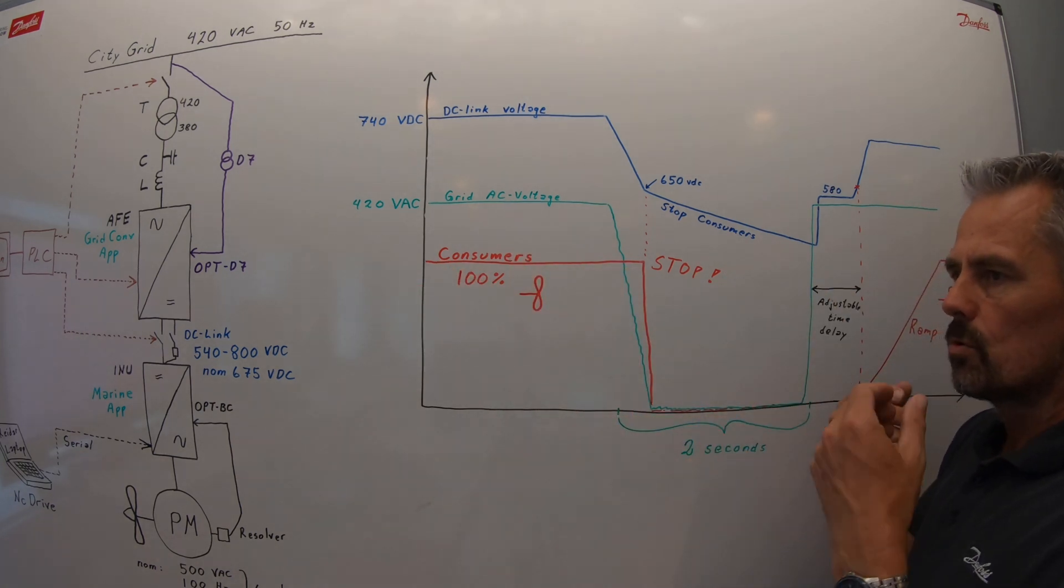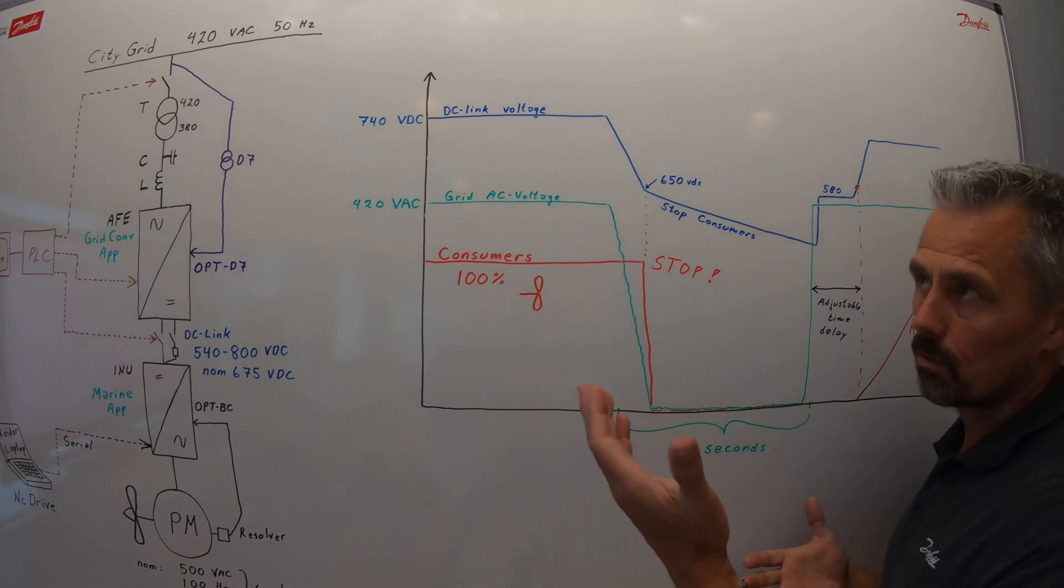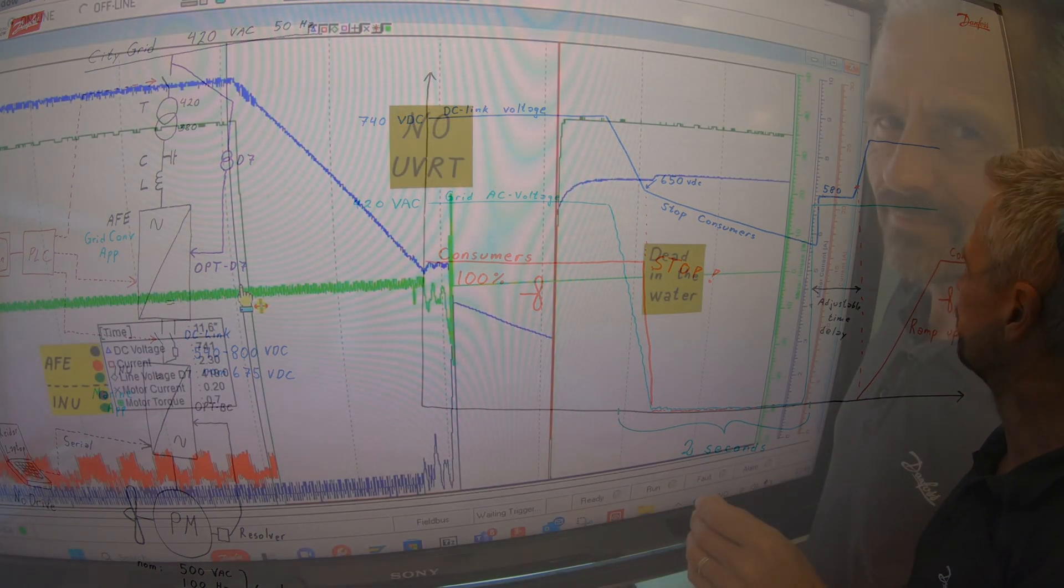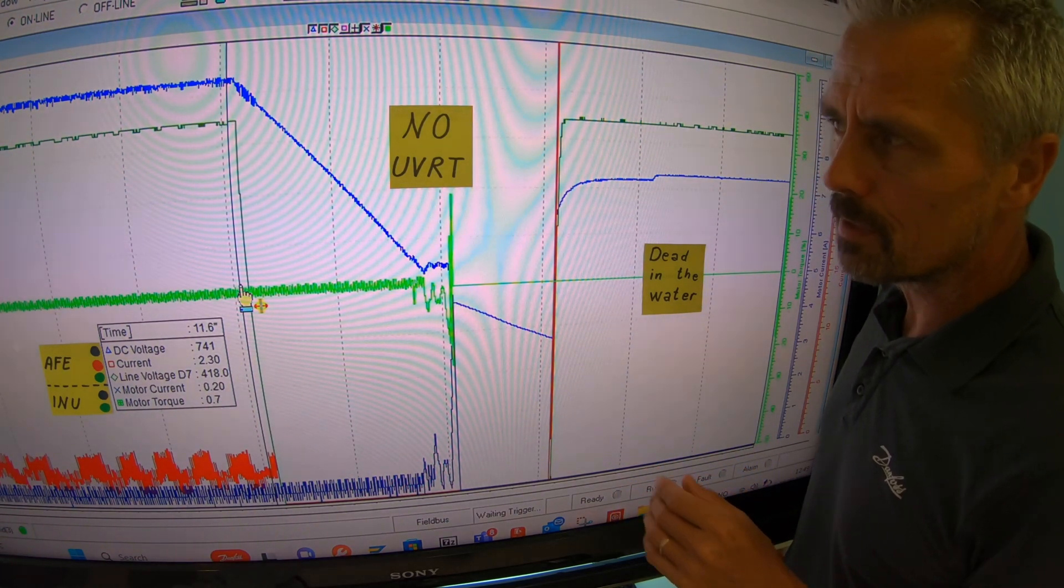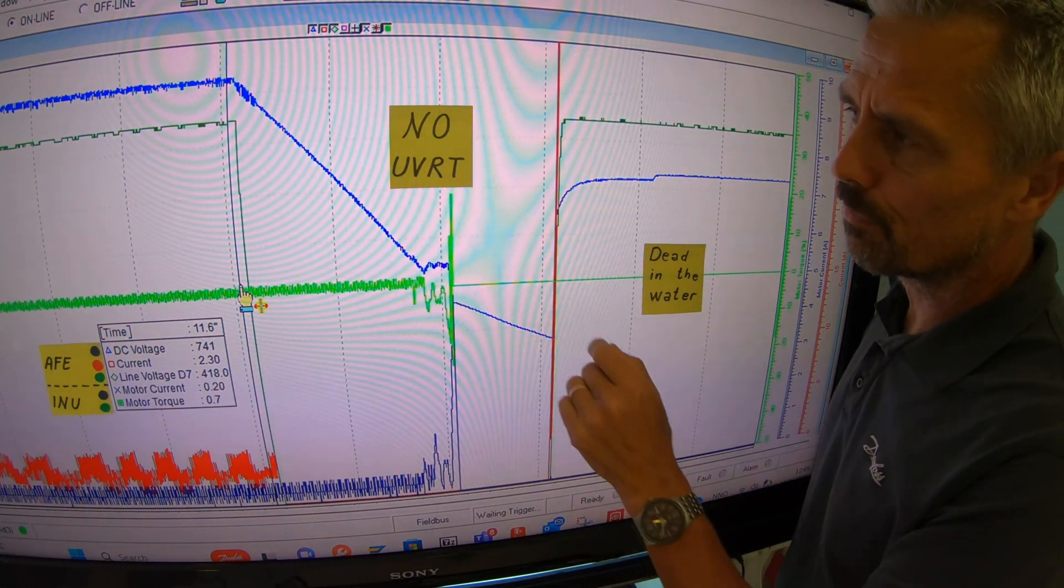So you put some seconds delay between them, so they start up in a sequence. And this way, you soften the load on the diesel gensets or the grid converters. For reference, let's see what happens without the undervoltage ride-through activated.